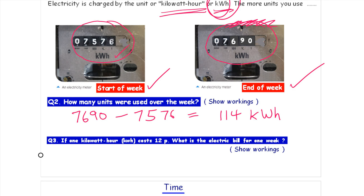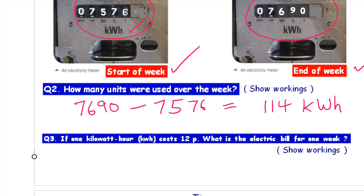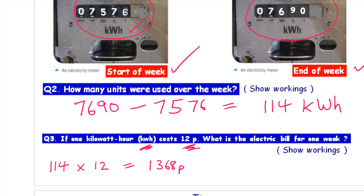If each kilowatt hour costs 12p, what's your electric bill? We've got 114 kilowatt hours — multiply those two values together and you get 1,368 pence. I wouldn't work out a shopping total in pence; I want it in pounds. To convert 1,368p into pounds, you divide by 100, since there are 100p in a pound. That gives £13.68. Easy — that's the end of this lesson. Well done.